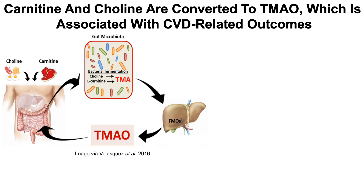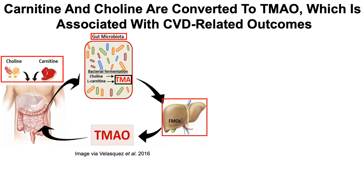Animal products, including meat, cheese, and eggs, contain carnitine and choline, metabolites that are converted by gut bacteria into trimethylamine, TMA. TMA then travels from the intestine into the blood and then to the liver, where it is converted by liver enzymes to TMAO, trimethylamine oxide.